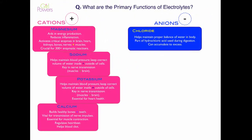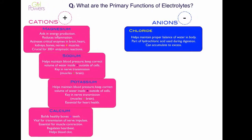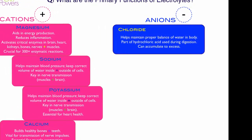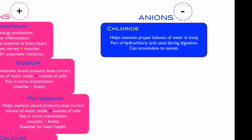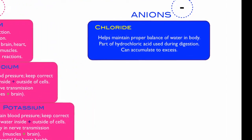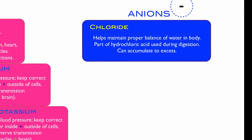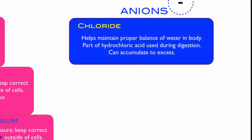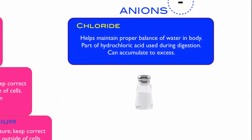Chloride is an anion. It helps maintain proper balance of water in the body and is part of hydrochloric acid, which is used during digestion. It can accumulate to excess, so it can be dangerous at times. It's found in salt in the form of sodium chloride — the chloride component of table salt — and is also found naturally in whole grains, tomatoes, and olives.